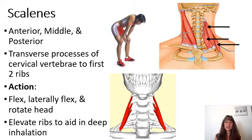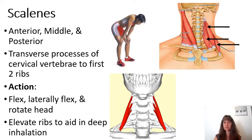The scalene muscles consist of anterior, middle, and posterior muscles. Looking at this picture, it's a little bit easier to see the anterior scalene at the top, then the middle scalene, and the posterior scalene.